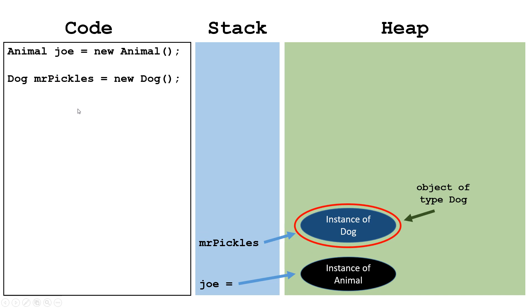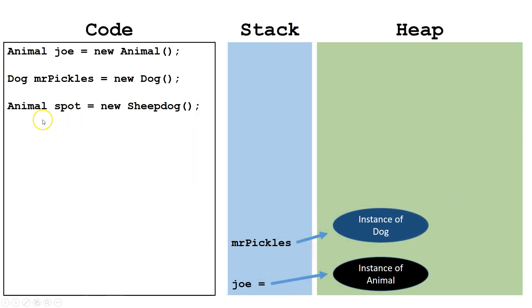Now, let's look at something interesting we can do with polymorphism. Here, we're declaring a variable Spot of type Animal and we're having it refer to a new Sheepdog object. This is legal because Sheepdog is a subclass of Animal.